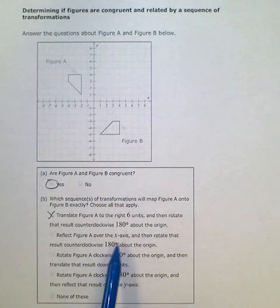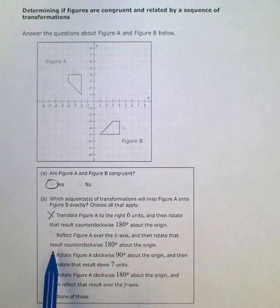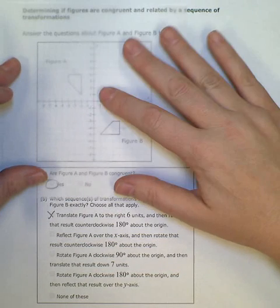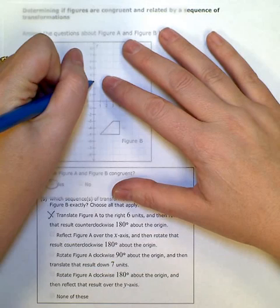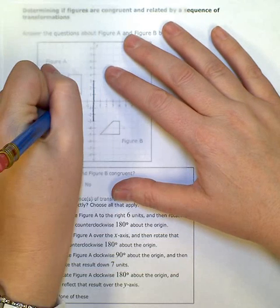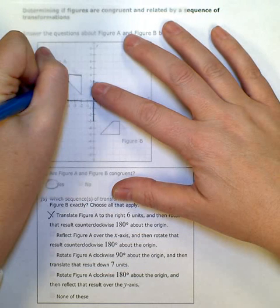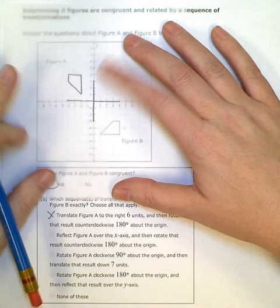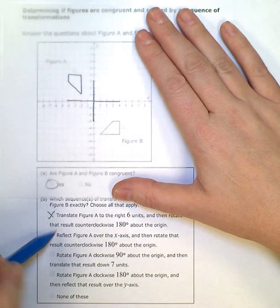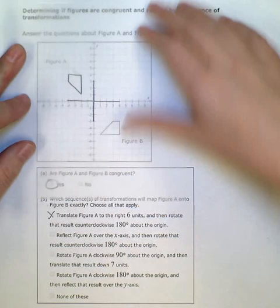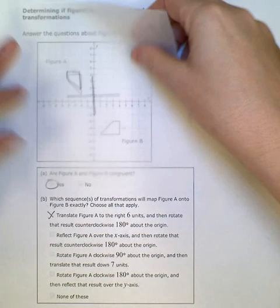Reflect the figure over the x-axis and then rotate that result counterclockwise 180 degrees. So now I'm going to try this again. Here's my axis. Here's my original figure. So if I'm going to first reflect it over the x-axis, that means I'm going to flip it from above the x-axis to below. So I'm going to actually take this paper and flip it.